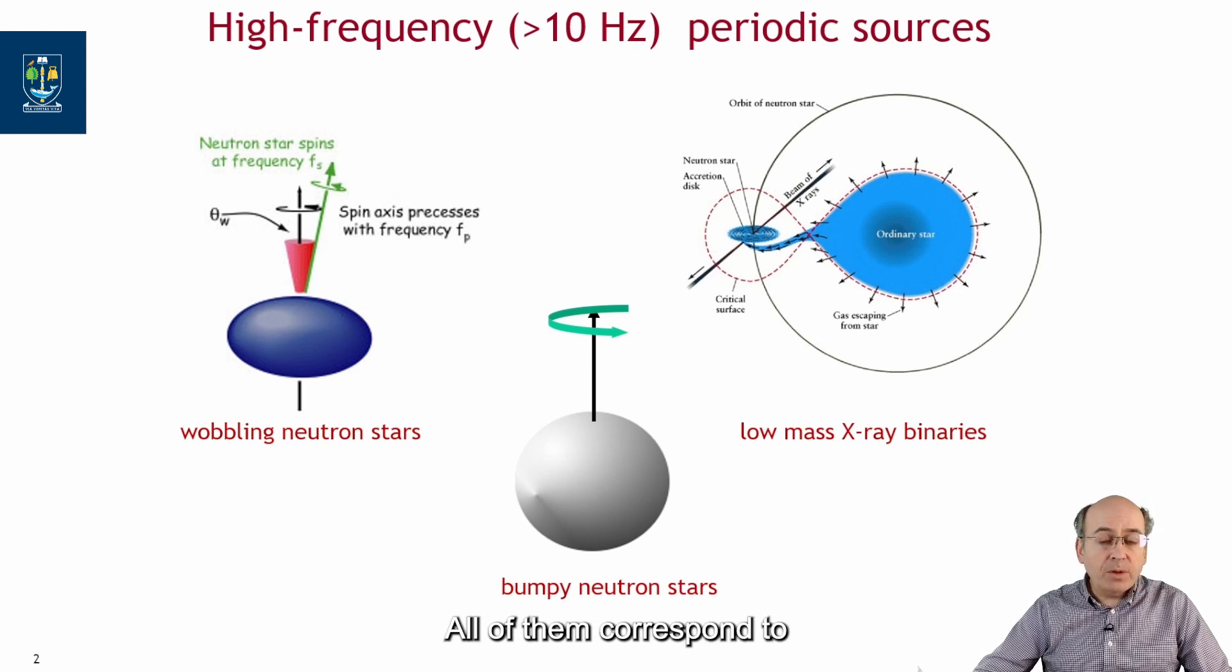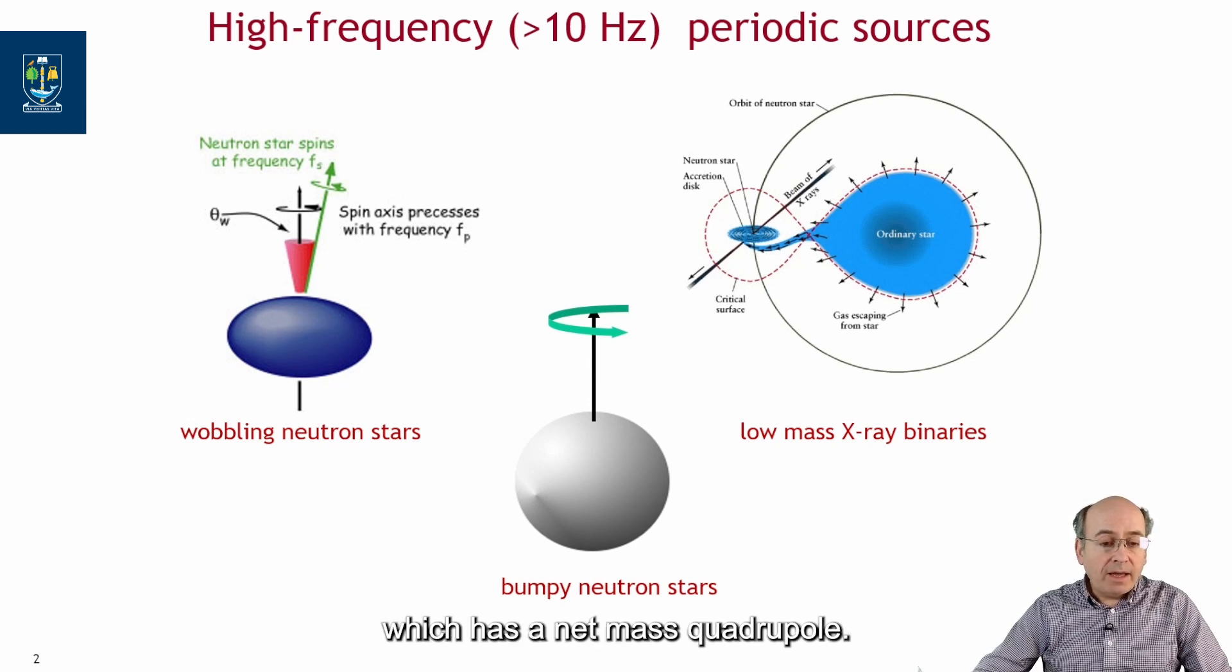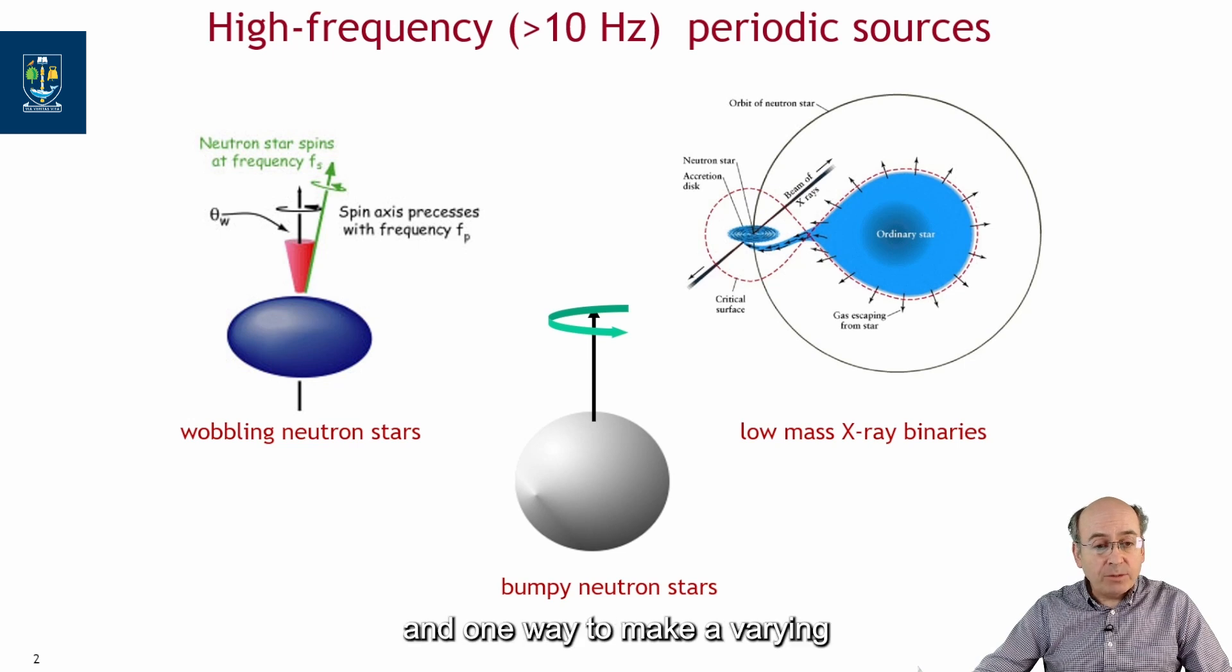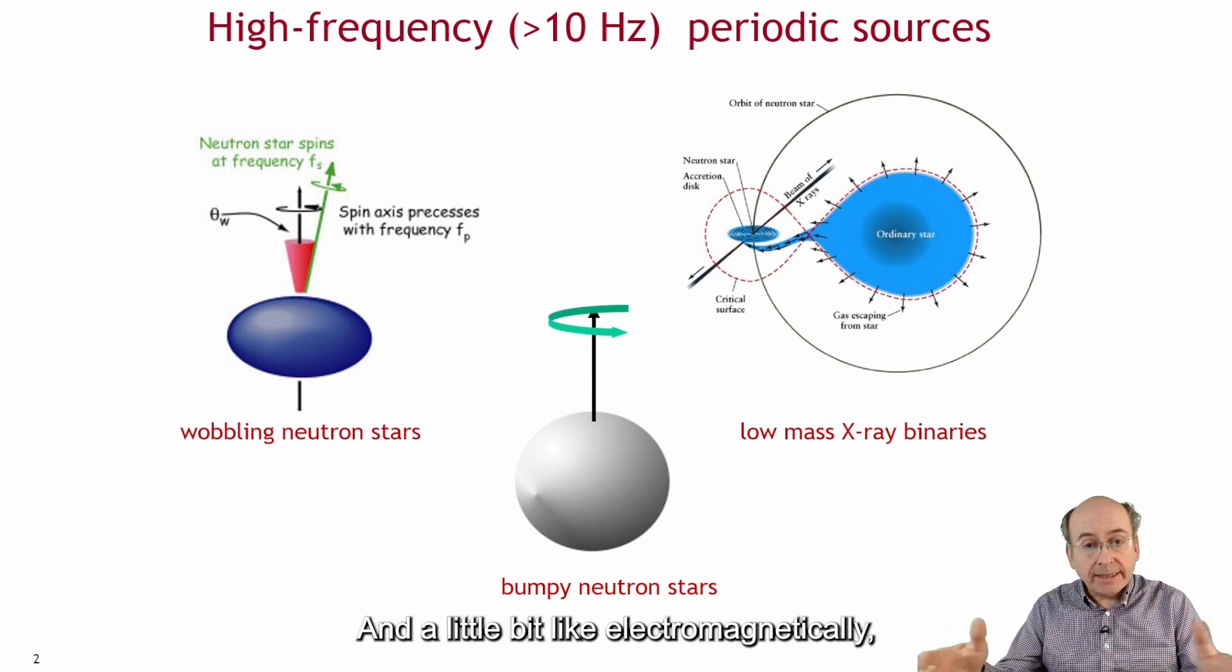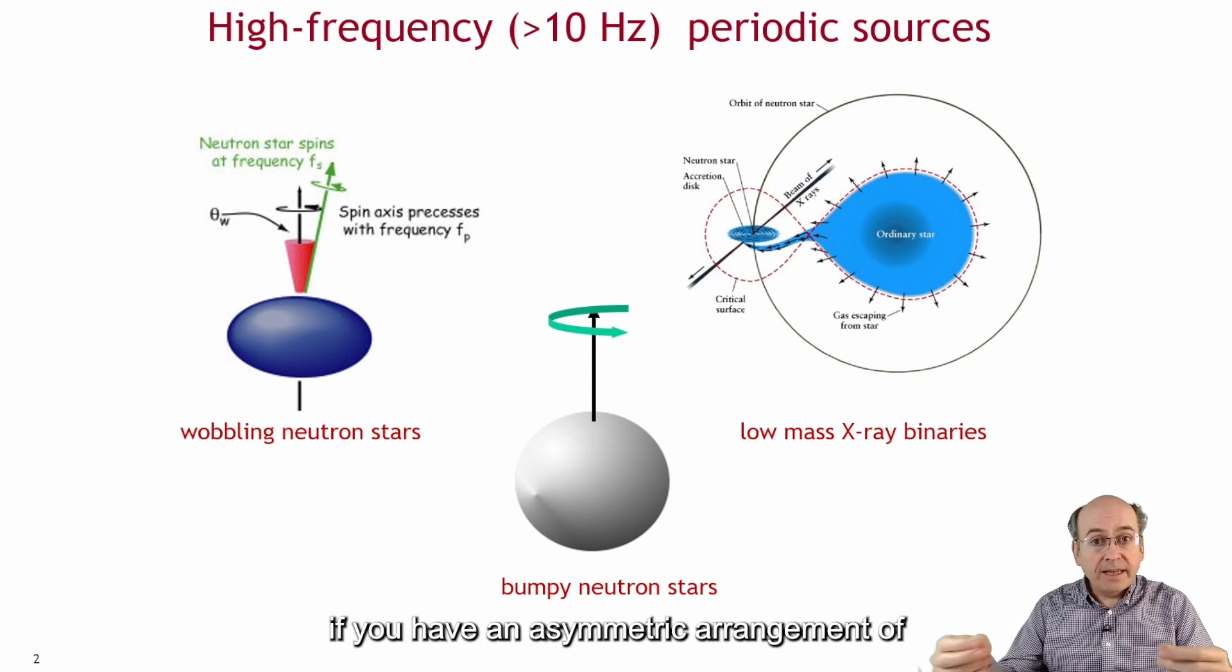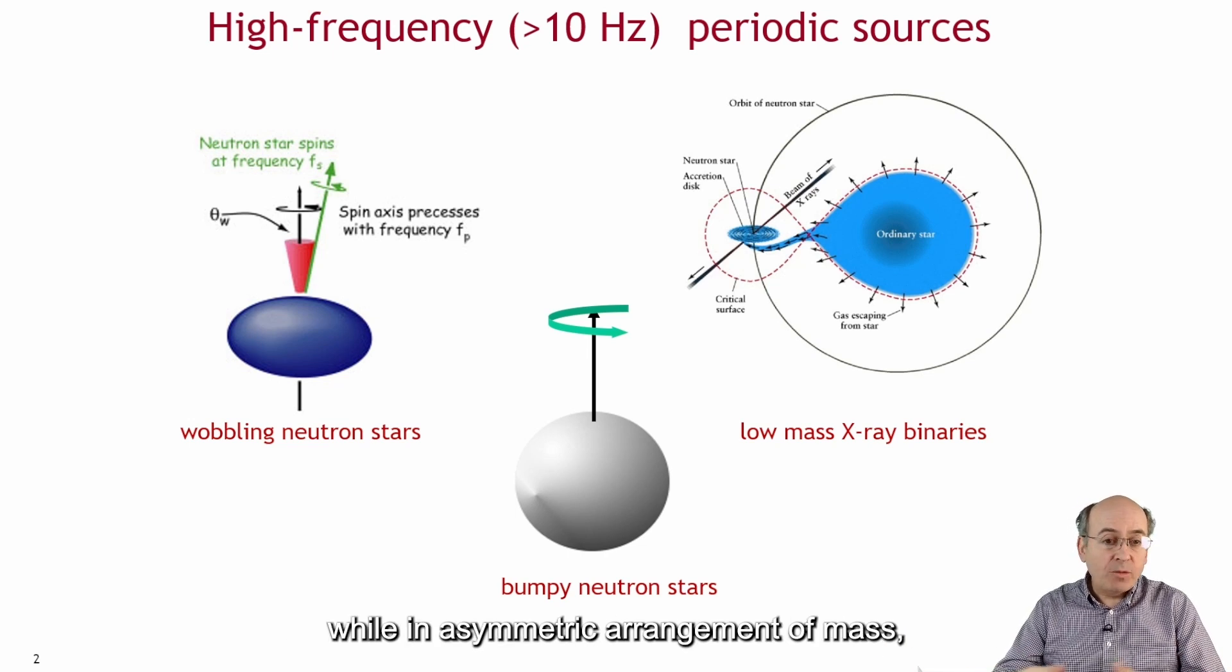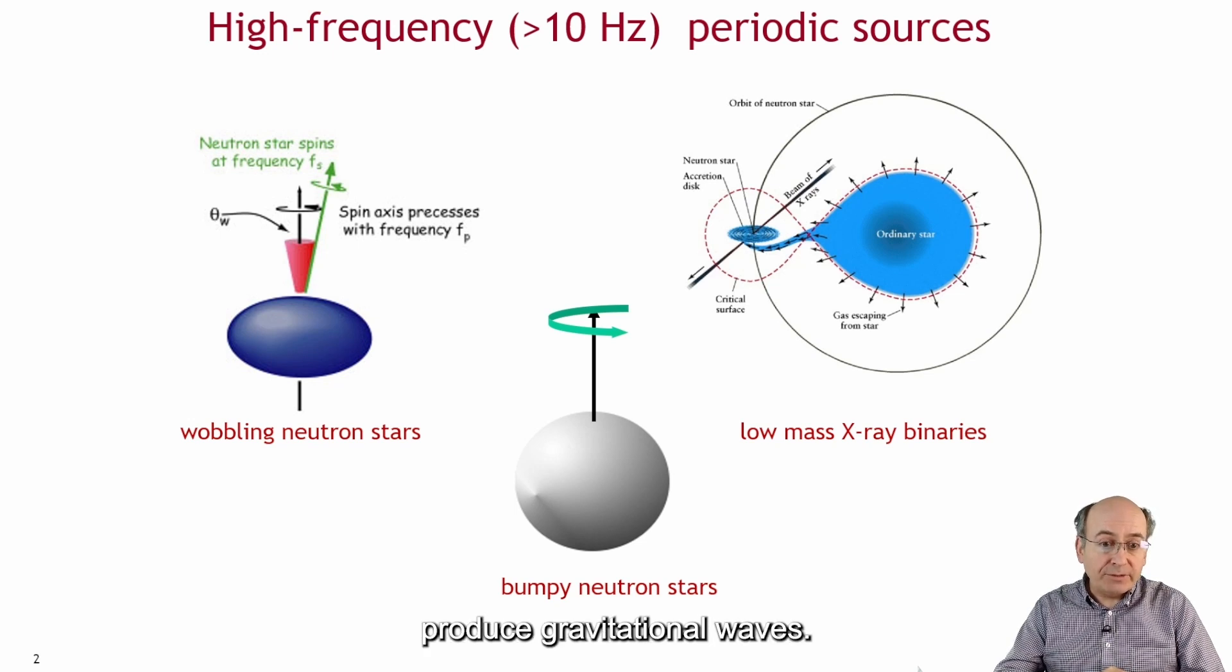All of them correspond to a compact object, usually a neutron star, which has a net quadrupole, a mass quadrupole. Remember you need a mass quadrupole which is varying to produce gravitational waves. And one way to make a varying mass quadrupole is to have an asymmetric object and to rotate it. A little bit like electromagnetically, if you have an asymmetric arrangement of charge and you rotate that, it produces EM waves, while an asymmetric arrangement of mass which you rotate will produce gravitational waves.